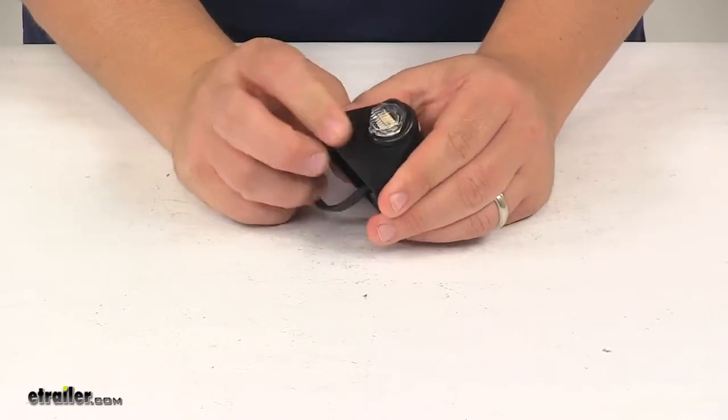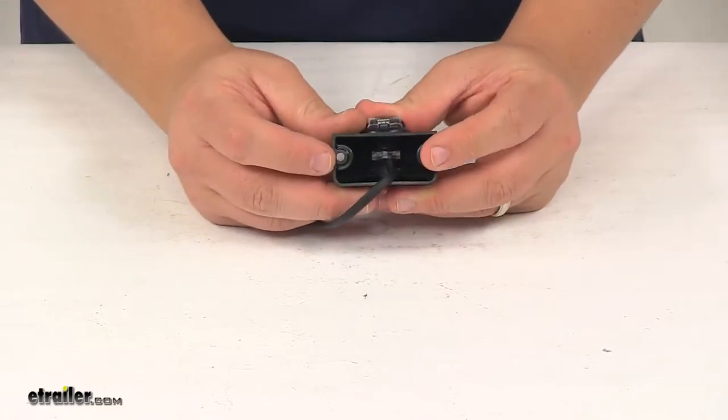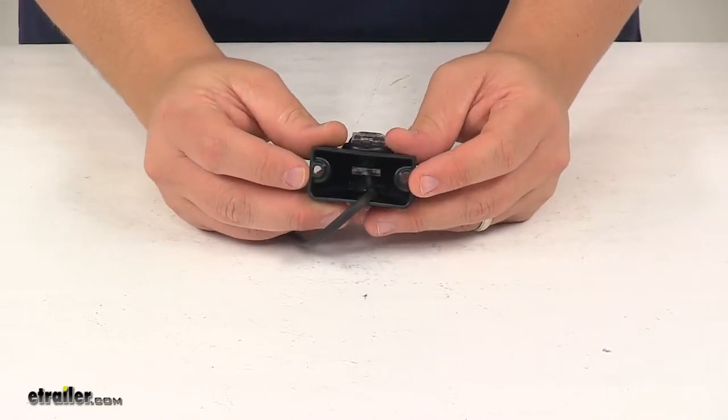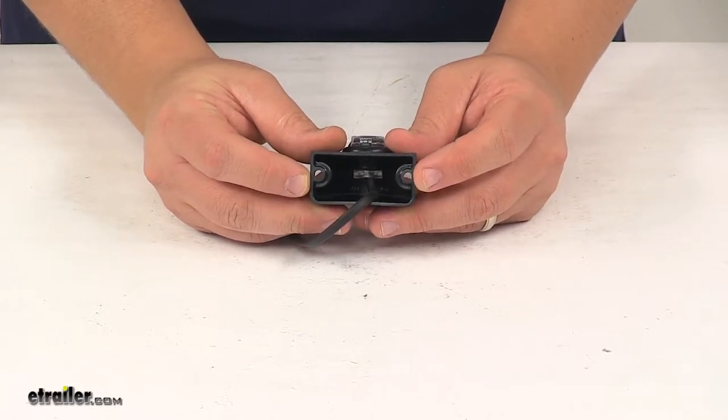But it does come with the bracket and the lights mounted in there with a nice grommet. So the bracket has two mount holes. Mounting hardware not included. These mount holes are separated on center by one and thirteen sixteenths of an inch.